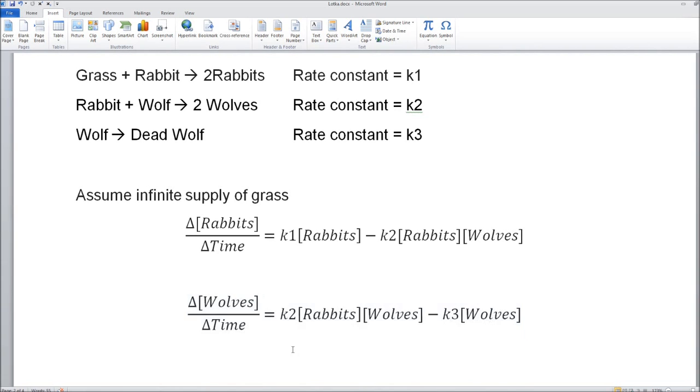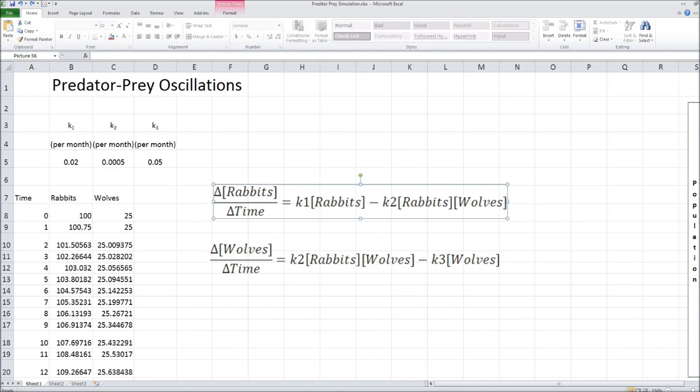So now let's go to our spreadsheet and I'll show you how easily you can simulate this. You can solve these equations and get a relationship between the rabbit population and the wolf population versus time. So we've got our three rate constants listed here. The first step that generates rabbits. The second step that generates a wolf. And the third step that depletes the wolves.